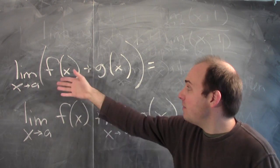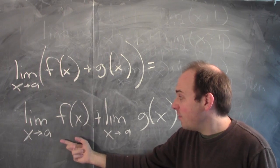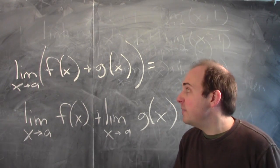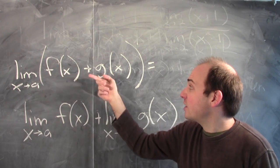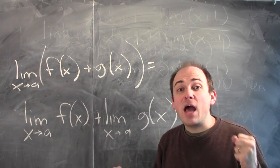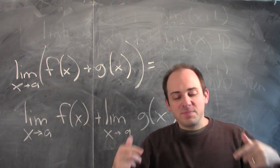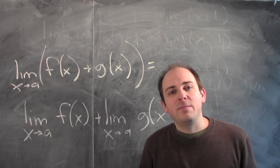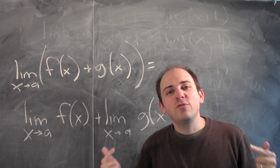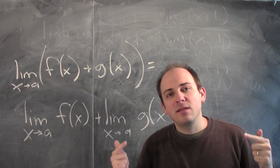If I want to make f of x plus g of x close to something, I just ask you to make f of x close enough to l and g of x close enough to m so that f of x plus g of x is as close as you like to l plus m. In other words, the limit of a sum is the sum of the limits. And the limit of a difference is the difference of the limits. And the limit of a product is the product of the limits.